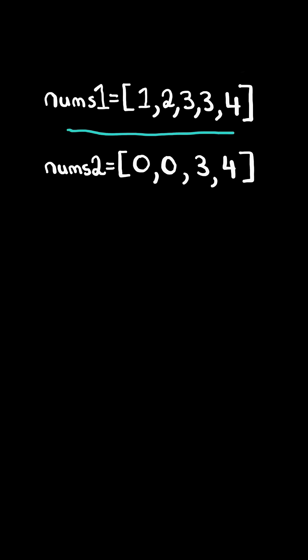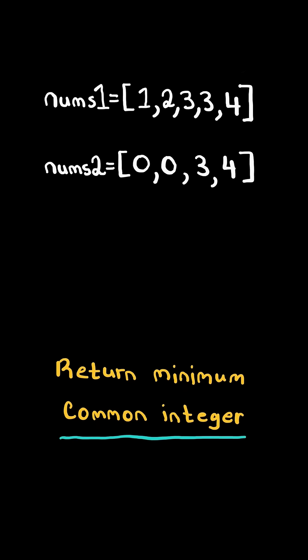Minimum common value. Given two arrays sorted in increasing order, return the minimum common integer.